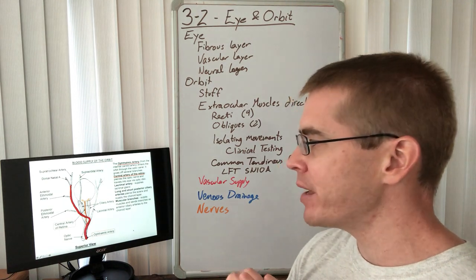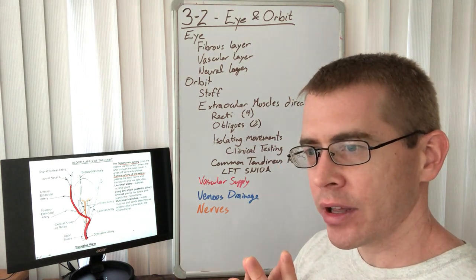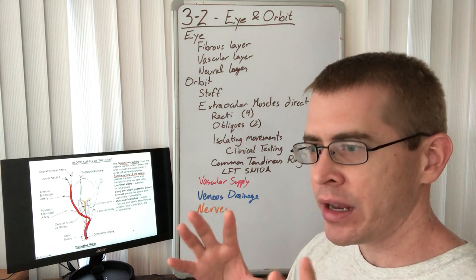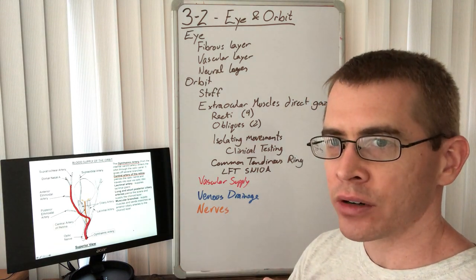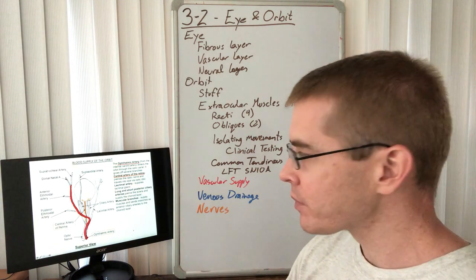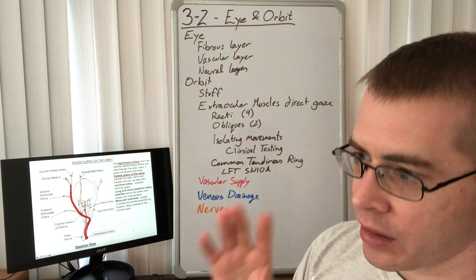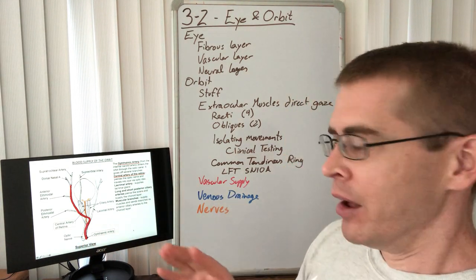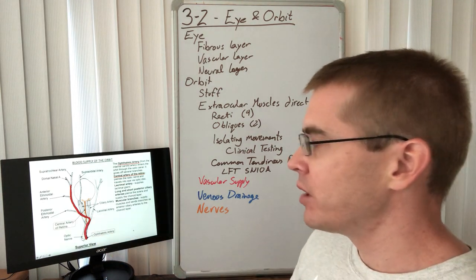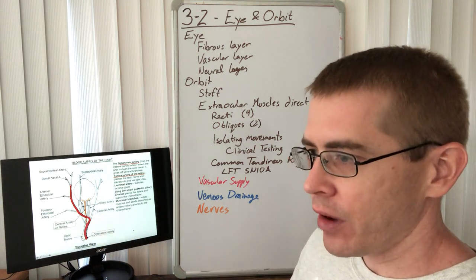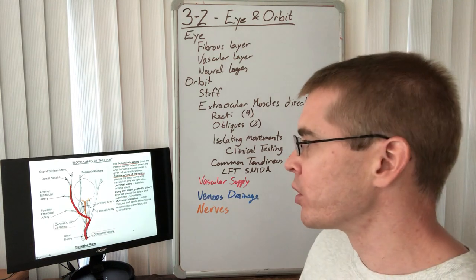The ophthalmic artery is the first main intracranial branch of the internal carotid artery. As soon as the internal carotid artery leaves the carotid canal, it gives off the ophthalmic artery, which travels anteriorly through the superior orbital fissure.